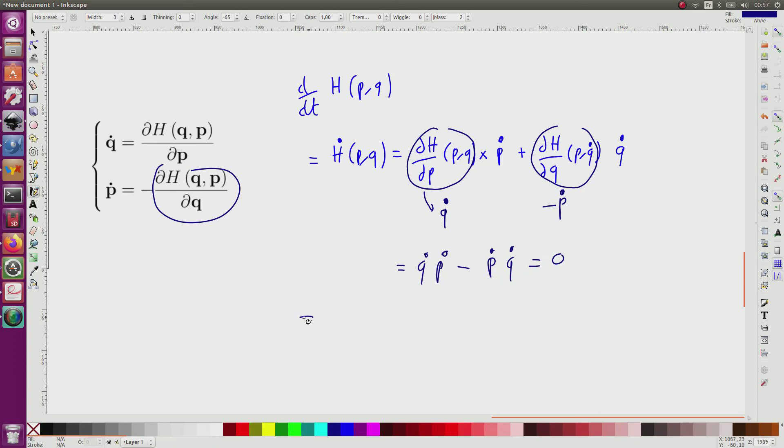From this we conclude that h of t is constant, which is already known since the system is conservative and the energy represented by the Hamiltonian is of course constant.